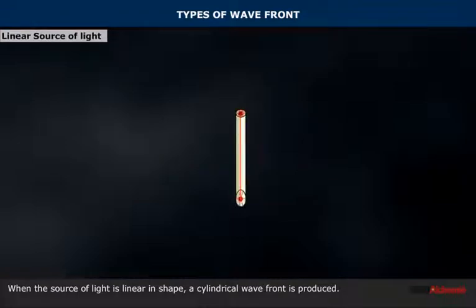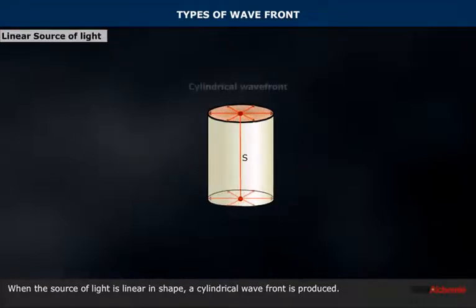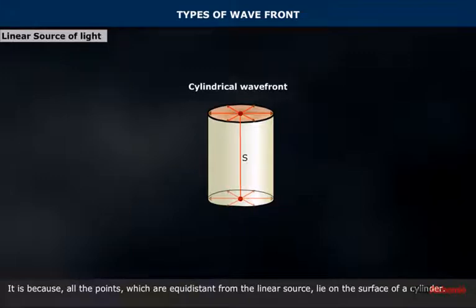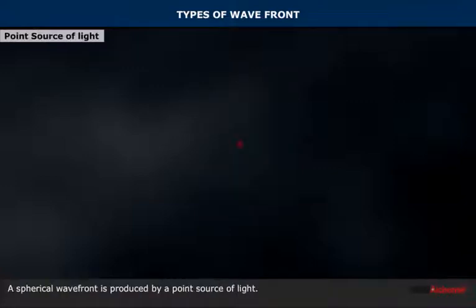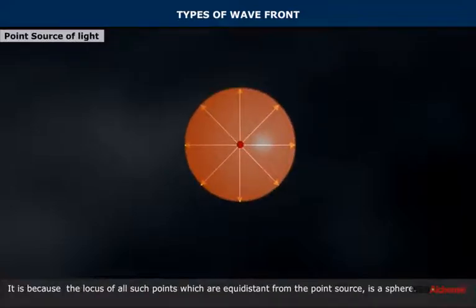When the source of light is linear in shape, a cylindrical wavefront is produced. This is because all the points which are equidistant from the linear source lie on the surface of a cylinder. A spherical wavefront is produced by a point source of light, because the locus of all such points which are equidistant from the point source is a sphere.